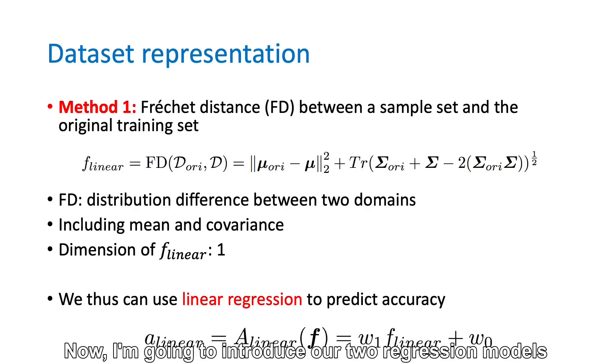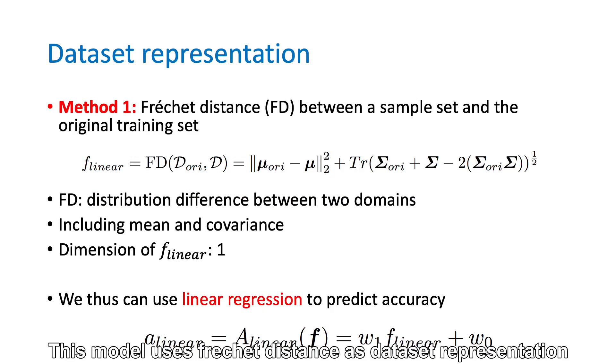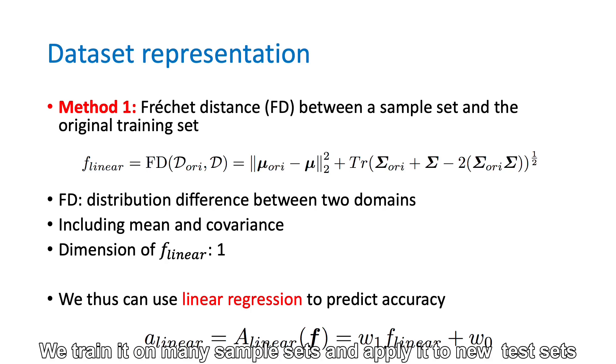Now I'm going to introduce our two regression models. The first one is a linear regression model. This model uses Fréchet distance as dataset representation. That is, each dataset is represented as one FD score. We train it on many sample sets and apply it to new test sets.